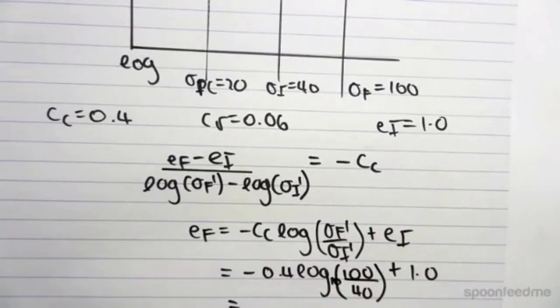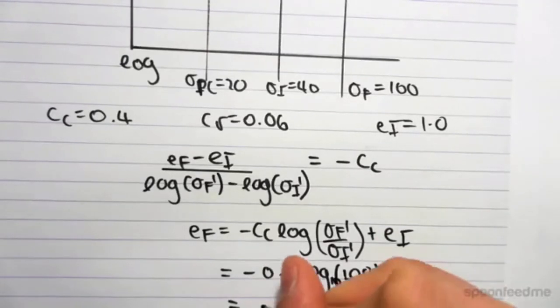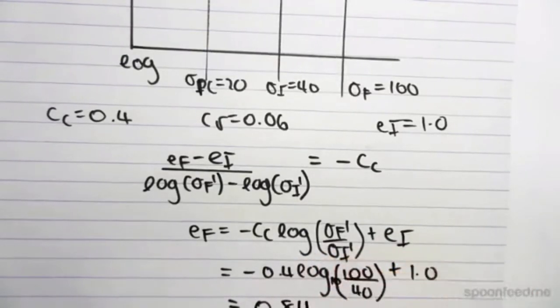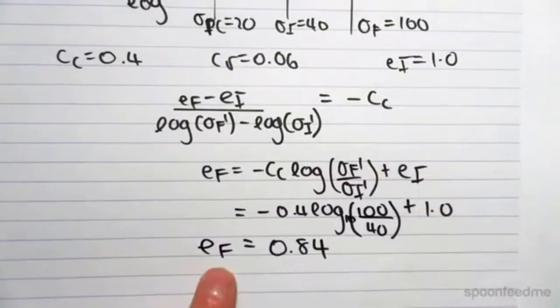So minus 0.4 log of 100 divide 40 plus 1. We get a final void ratio of 0.84. So there's our final void ratio.